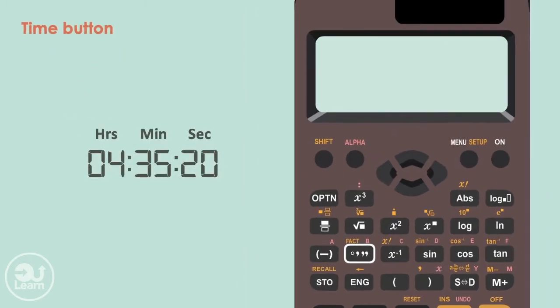To represent, for example, 4 hours, 35 minutes and 20 seconds, we start by typing 4, followed by this button, which makes a small square in the top right corner. Then type 35 followed by the time button again, and finally 20 followed by the time button. Pressing equals shows this time.